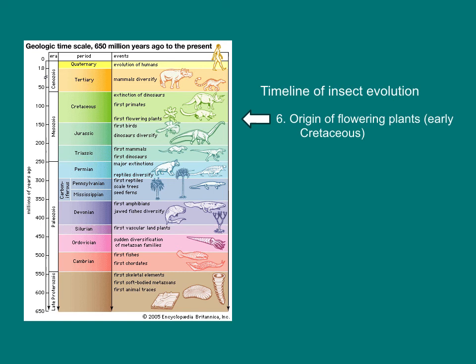The last major event in insect evolution was the appearance of flowering plants. Flowering plants appeared in the early Cretaceous, approximately 140 million years ago. Many of the largest insect orders — Coleoptera, Diptera, Hymenoptera, Lepidoptera, and Hemiptera — underwent a major radiation when flowering plants appeared on Earth. The partnership between insects and flowering plants was a major event in the history of life on Earth.